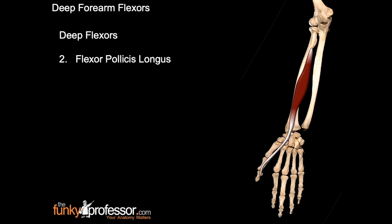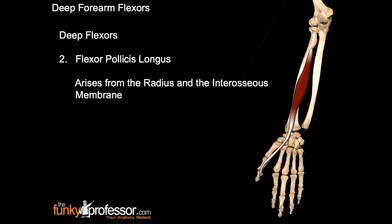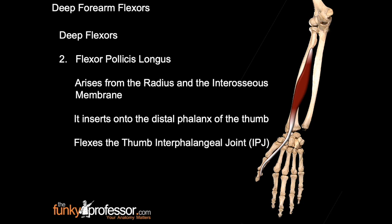Flexor pollicis longus. This muscle arises from the radius and the interosseous membrane. It inserts via a long slender tendon onto the distal phalanx of the thumb. It flexes the thumb at the interphalangeal joint.